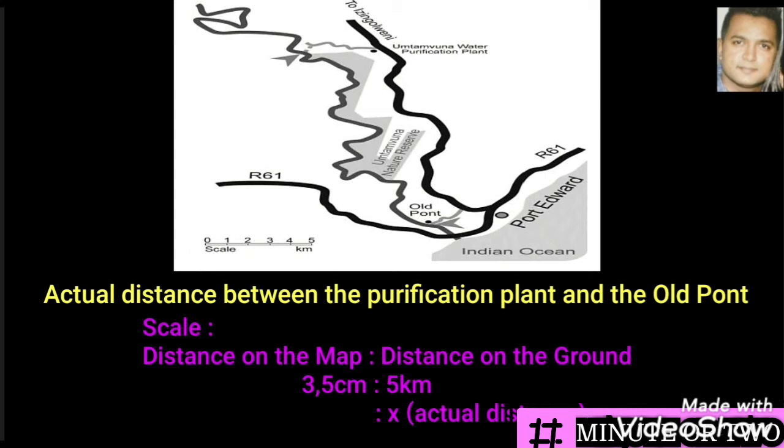How do we get the measurement for the distance on the map? On the map they've told us about two places. So what we need to do is take our ruler and measure the distance between those two places, the purification plant and the old pond.